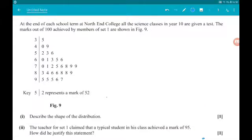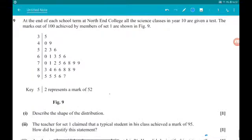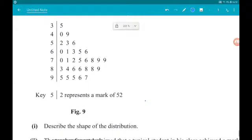Okay, question 9. We have a data distribution. At the end of each school term at North End College, all the science classes in Year 10 are given a test. The marks out of 100 achieved by members of Set 1 are displayed in Figure 9. So we have a stem and leaf diagram. We've even got the key just in case we forget how they work. 5 on the left, 2 on the right represents 52.